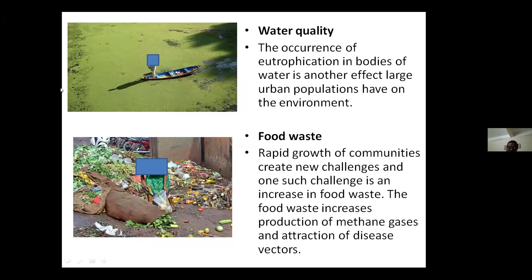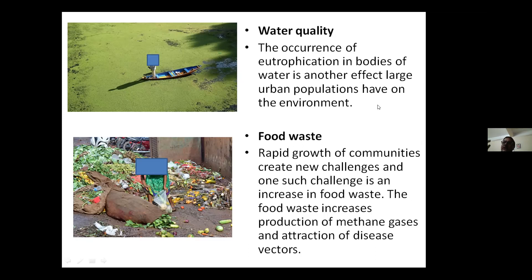Urbanization also results in deterioration of water quality, because large amounts of biodegradable waste are produced, and pollution occurs in addition to eutrophication. Another issue is food waste — the rapid growth of communities has resulted in new challenges, one of which is the production of food waste containing unused products and products at expiration as well as spoilage. This results in creation of health hazards, methane gas production, and attraction of vectors of different types of diseases.